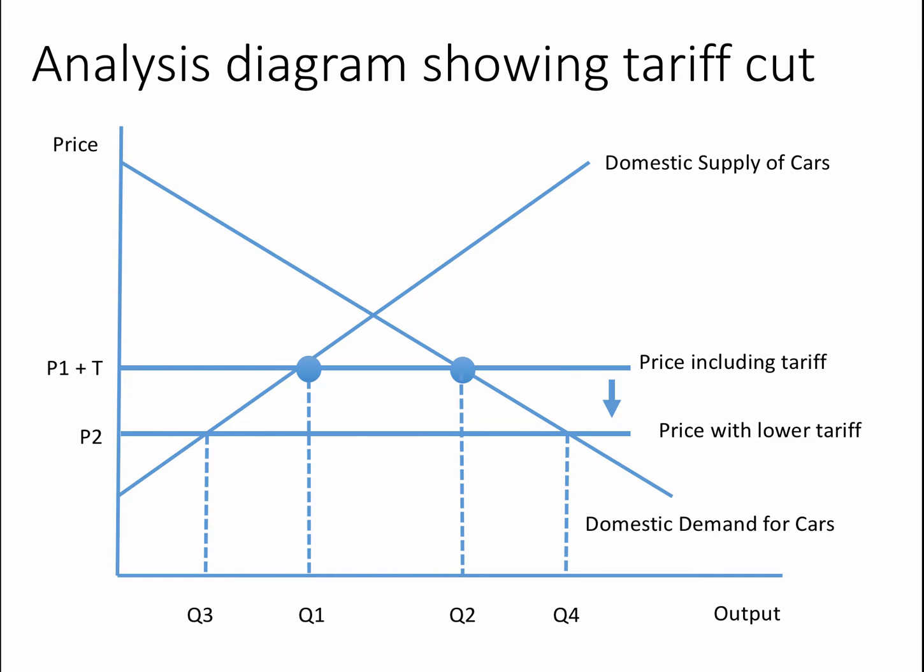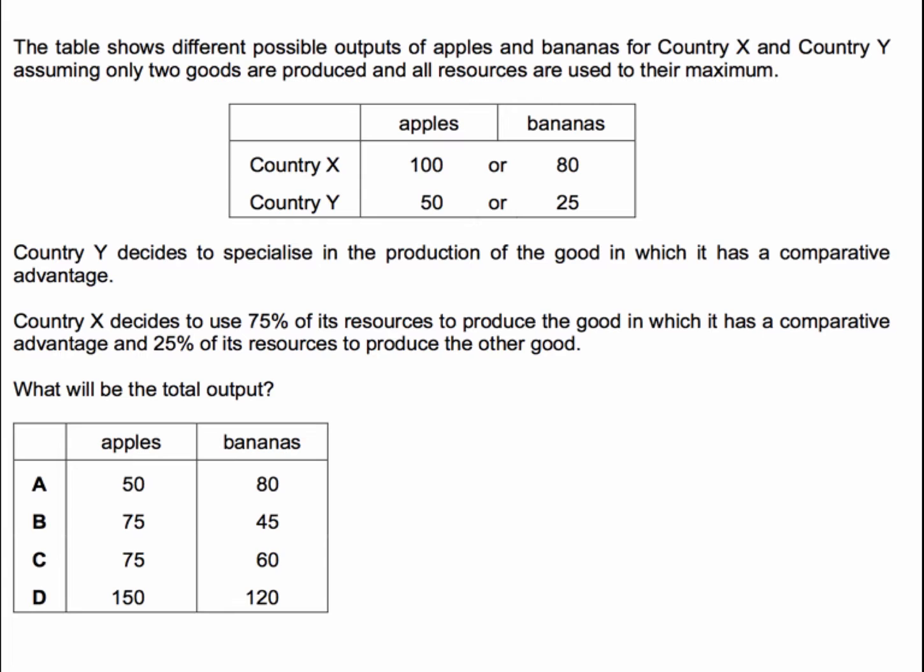Let's have a go at question two. The table below shows different possible outputs of apples and bananas for two countries. We're assuming only two goods are produced, and all resources are used to their maximum. Country Y decides to specialise in the production of the good in which it has a comparative advantage. Country X decides to part-specialise: 75% of resources go into the good in which it has a comparative advantage, and 25% in the other good. What will be the total output of apples and bananas? Have a go.